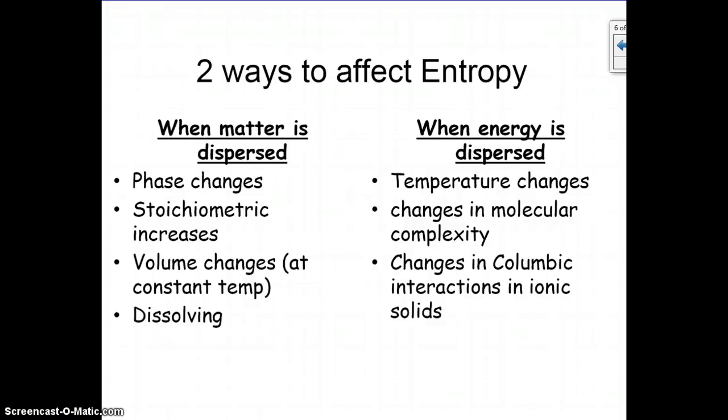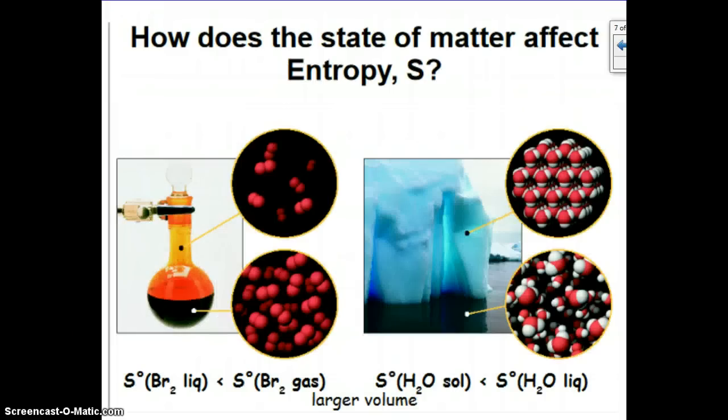So there's two ways that you can affect the entropy. Affect how the matter is dispersed, or how the energy is dispersed. Matter dispersing can happen through phase changes, stoichiometric increases, volume changes at constant temperature, and dissolving. Energy dispersal occurs through temperature changes, changes in molecular complexity, or changes in the coulombic interactions within an ionic solid. So let's start looking at all these a little more in depth.